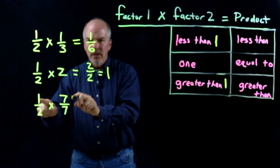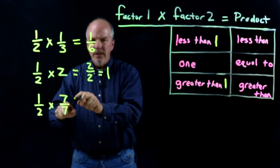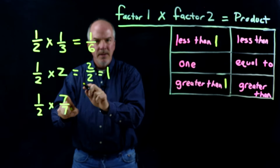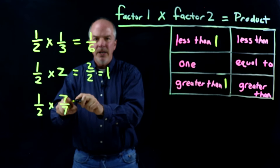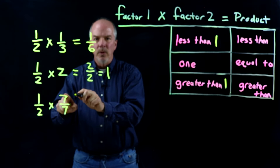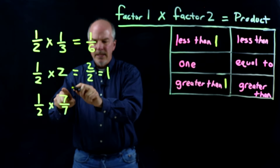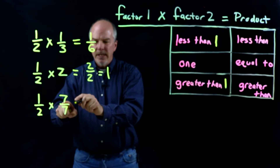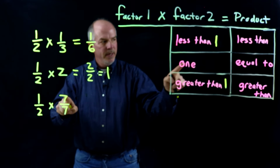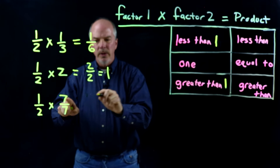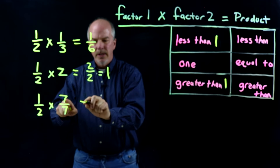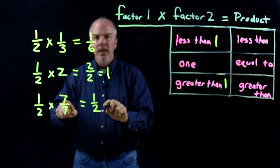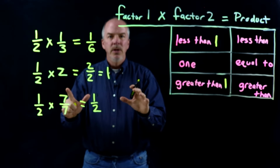And then this example: 1 half times 7 over 7. I'm writing 7 over 7 because more than likely when you have a question, they're not going to write the number 1 — they're going to write a fractional form of 1. In this case it's 7 over 7. When you multiply something by 1, it's going to be equal to what you started with, so that's going to equal 1 half.